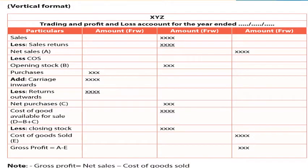Now for the vertical format. You don't have a debit or credit side — instead you have one set of columns: particulars and amount. We start with sales in the second column, then less sales returns, and after subtracting we arrive at net sales, which is carried to the last column.